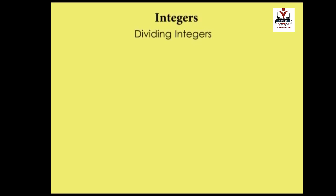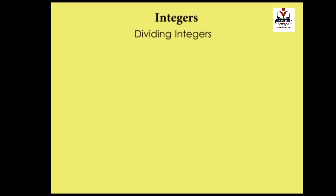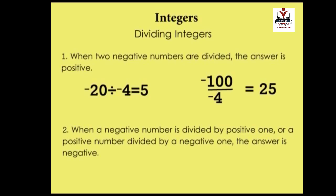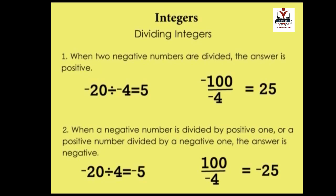Division: integers are divided just like natural numbers, with two rules. One: when two negative numbers are divided, the answer is positive. So minus 20 divided by minus 4 is plus 5, and minus 100 over minus 4 is plus 25. Secondly, if a negative number is divided by a positive one, or a positive divided by a negative, the answer is negative. So minus 20 divided by 4 is minus 5, and 100 divided by minus 4 is minus 25.